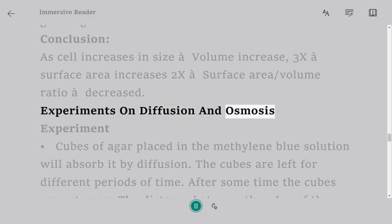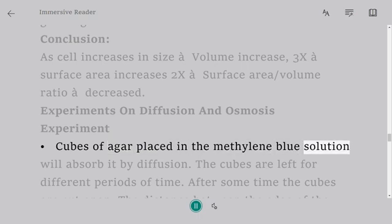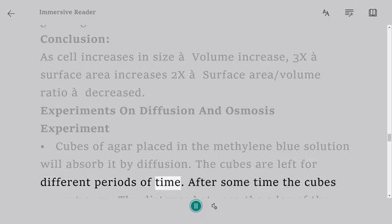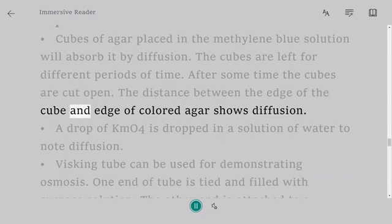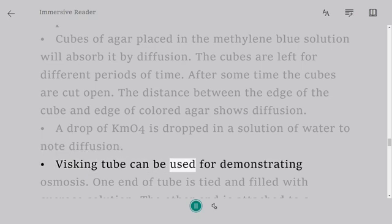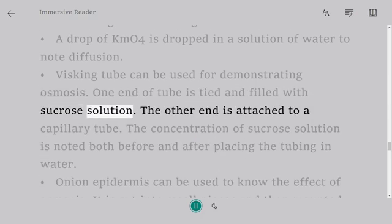Experiments on diffusion and osmosis: Cubes of agar placed in the methylene blue solution will absorb it by diffusion. The cubes are left for different periods of time. After some time, the cubes are cut open. The distance between the edge of the cube and edge of colored agar shows diffusion. A drop of KMnO4 is dropped in a solution of water to note diffusion. Visking tube can be used for demonstrating osmosis. One end of tube is tied and filled with sucrose solution. The other end is attached to a capillary tube. The concentration of sucrose solution is noted both before and after placing the tubing in water.